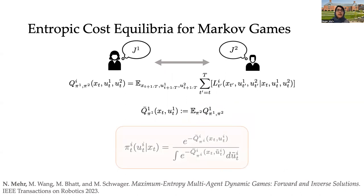And then, at equilibrium, the probability of taking action by each agent is proportional to the exponential of the negative expected cost that is associated with that state and particular action of the agent.